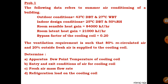Room sensible heat gain is 84,000 kJ per hour and room latent heat gain is 21,000 kJ per hour. These are the heat sources for sensible heat and latent heat. There are a number of sources we covered in the theory part. Sensible heat sources include walls, ceilings, floor, and partition walls, as well as solar radiation through glass.